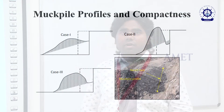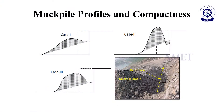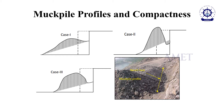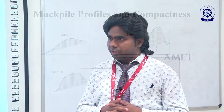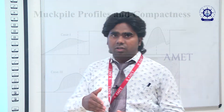Coming to muck pile profile and compactness: when rocks are broken by the application of explosive energy, the muck pile generated will occupy different shapes and profiles. Depending upon the shape and size — the profile of the muck pile — it will affect the efficiency of your material handling equipment. Depending on the muck pile profile, we are expected to deploy a particular type of equipment for efficient handling of the material. Here we have depicted three different cases — case 1, case 2, and case 3 — for the muck pile profile.